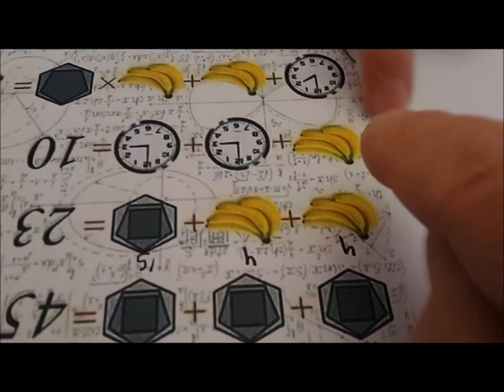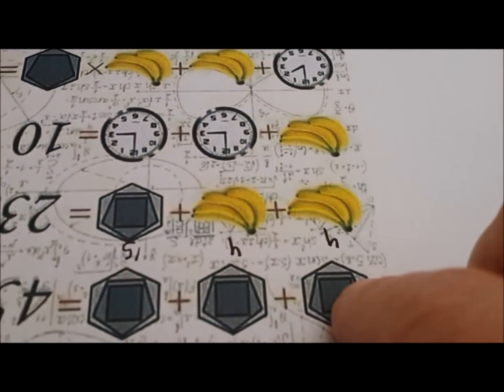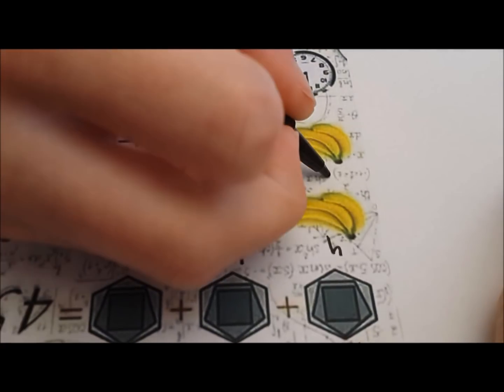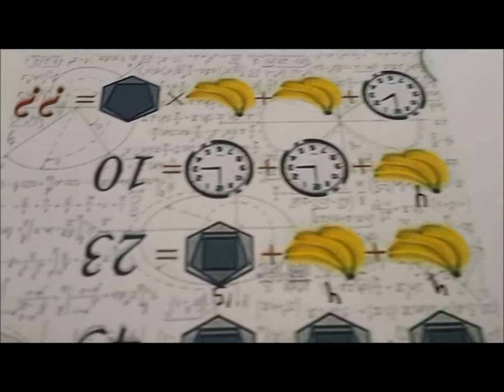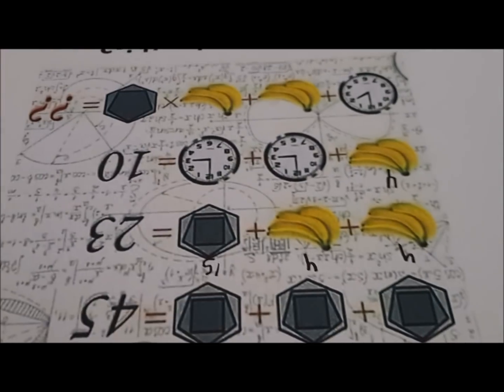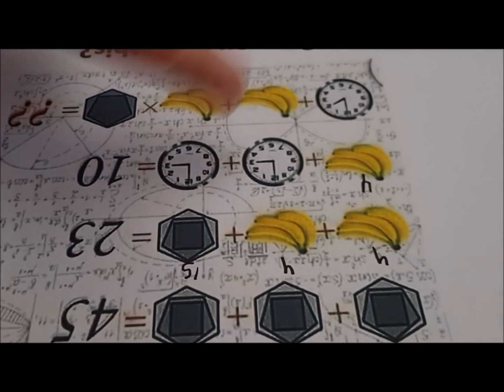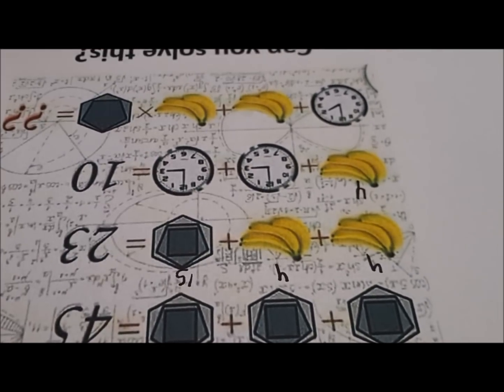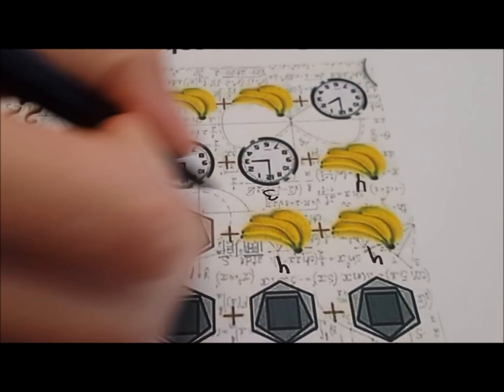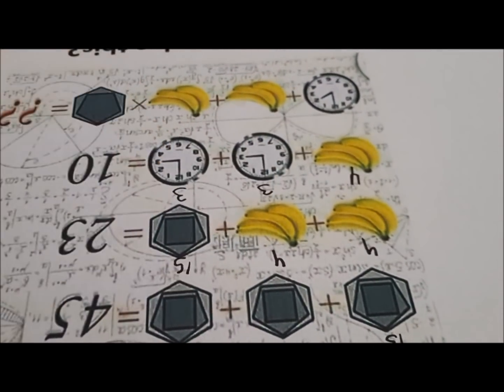Now, is this set of bananas the same as this? Yes. Okay, put a 4 there. Now, what are each of these clocks? 3. Each is 3? Okay, put a 3 next to each one.